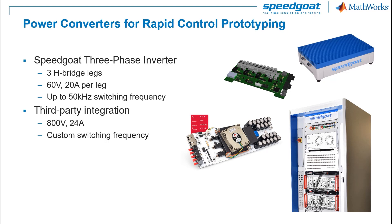Speedgoat can also support us with power conversion and signal conditioning. The Speedgoat three-phase inverter can be used as an interface to small electric motors, but there is also the possibility to integrate higher power devices — for example, power converters supporting 800 volts, 24 amps, and custom switching frequency.